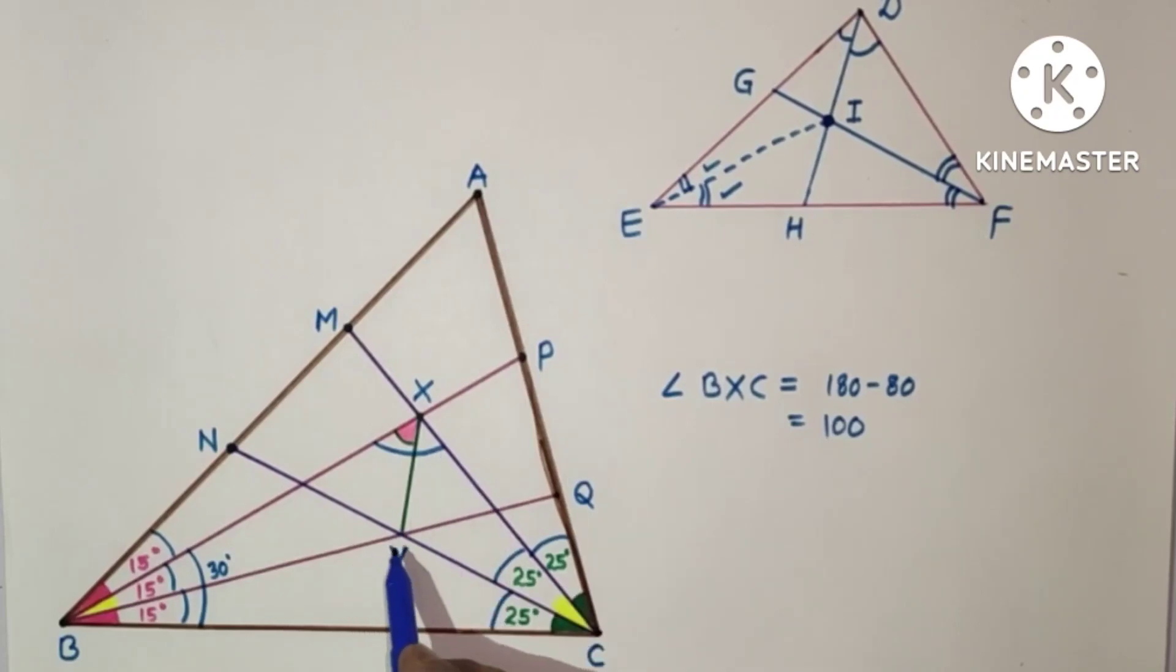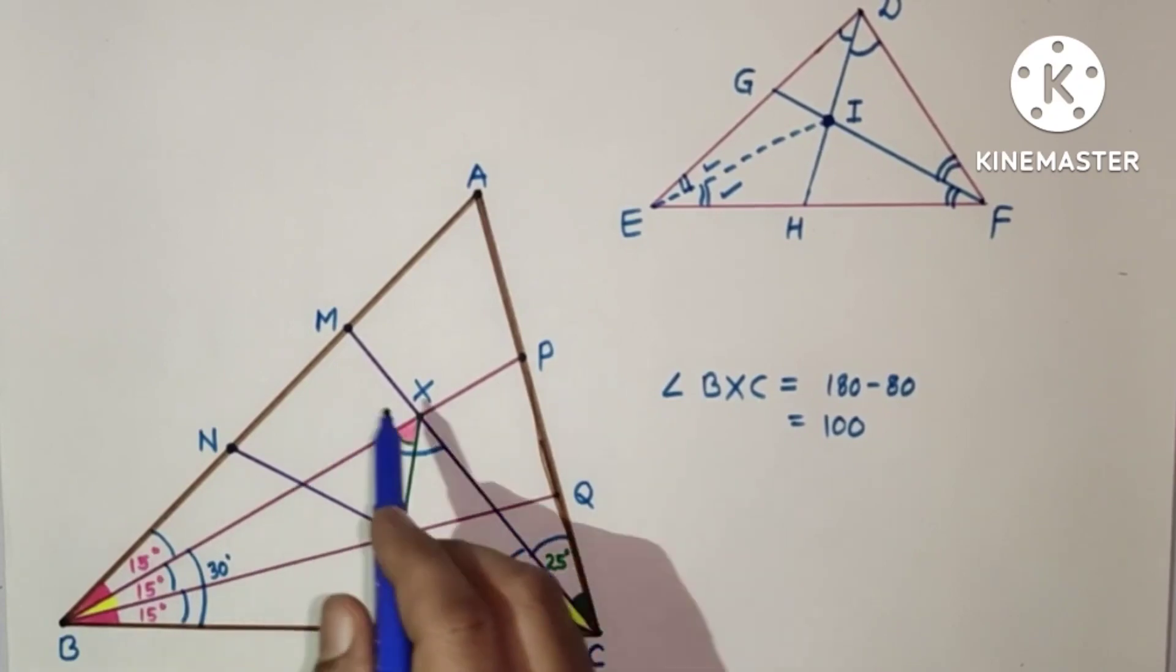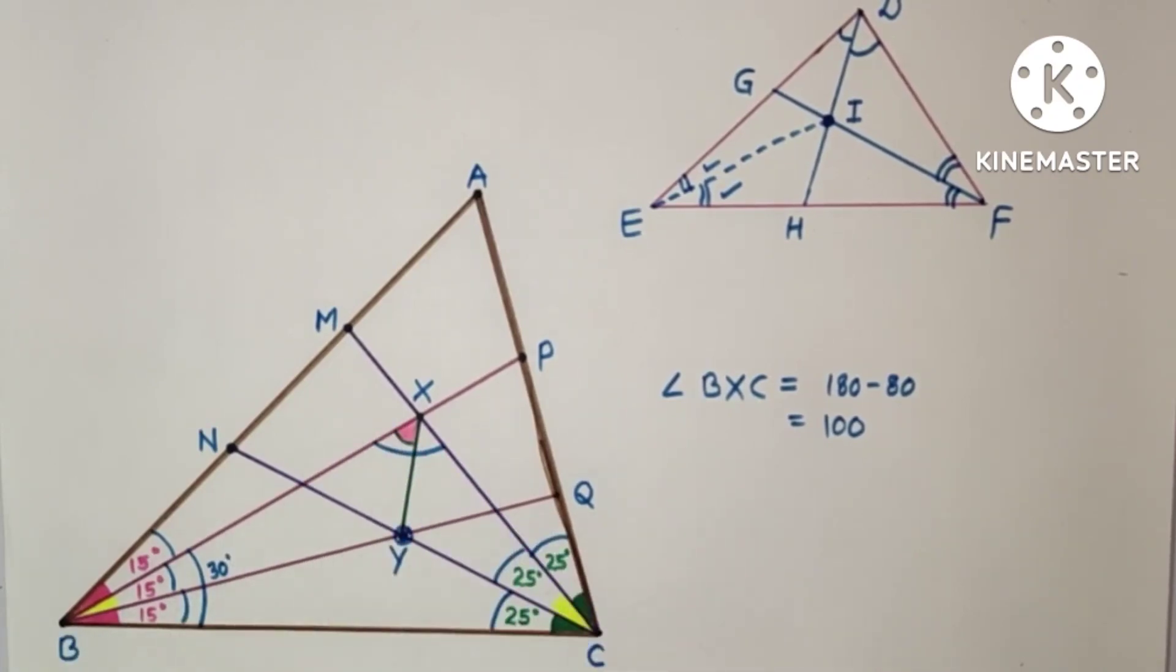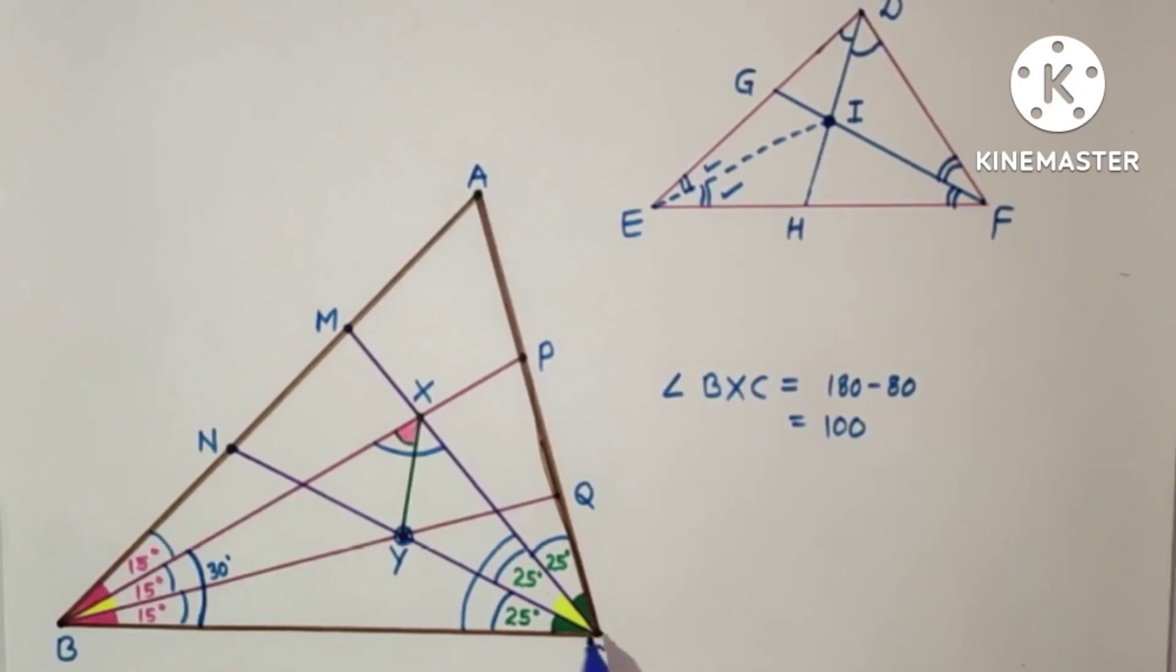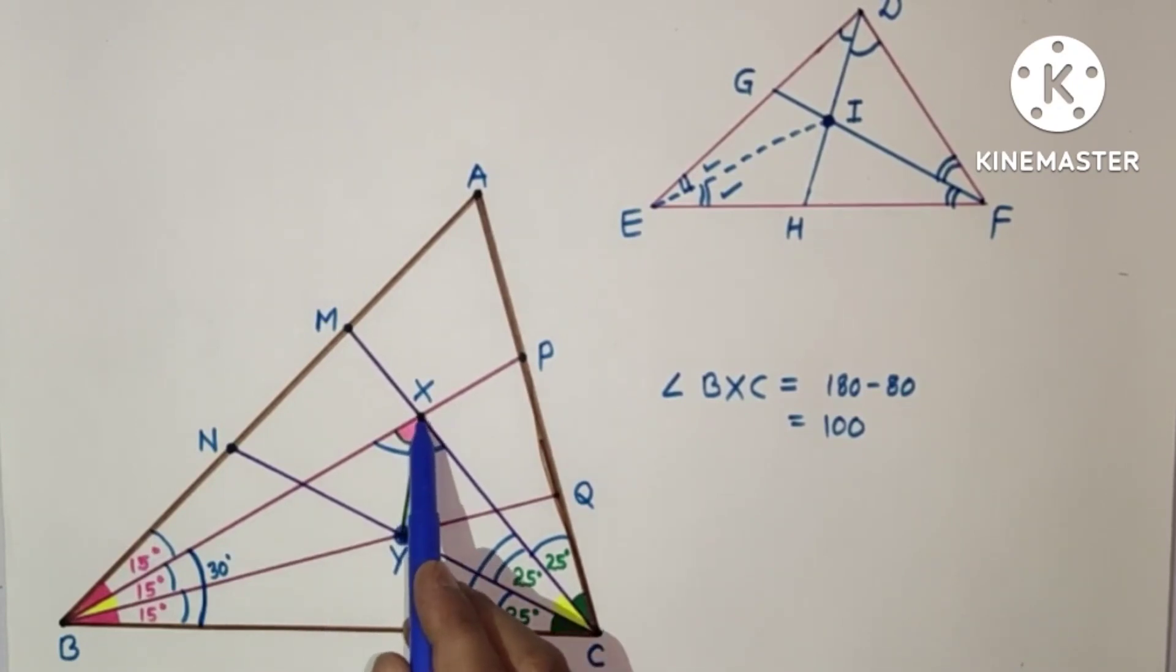Now since this point, BXC is considered this triangle BXC and BQ bisects this angle, CN bisects this angle, so point of intersection of these two bisectors is this point Y. And B, X, and C are the vertices of the triangle.